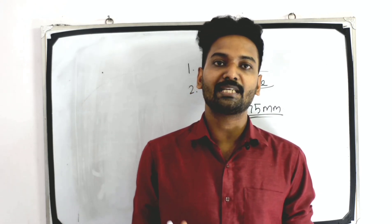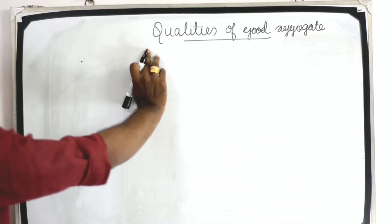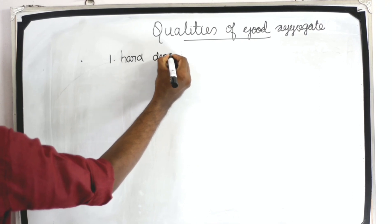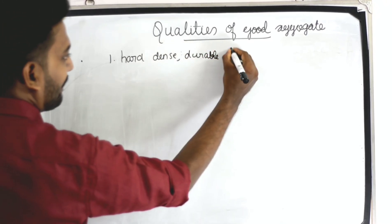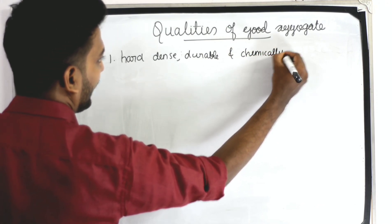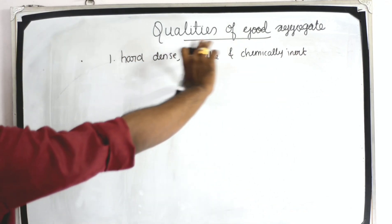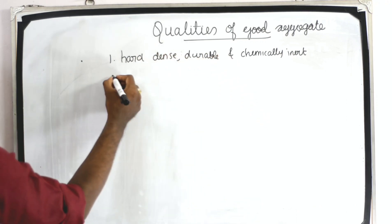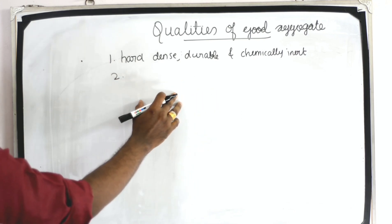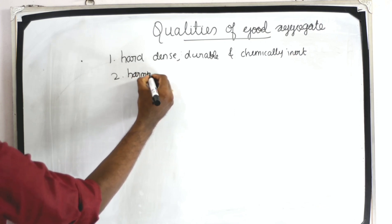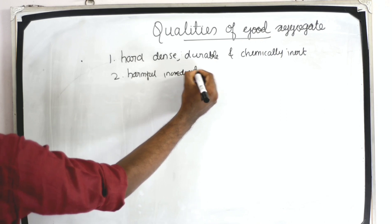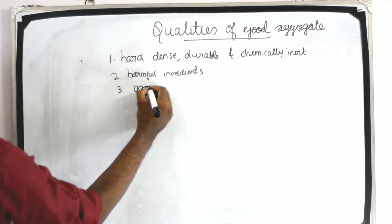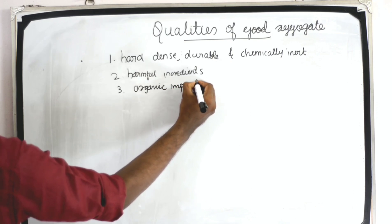Next, we are going to discuss the qualities of good aggregate. First, aggregate should be hard, dense, durable, and chemically inert. Second, it should not contain harmful ingredients. Third, it should be free from organic impurities.